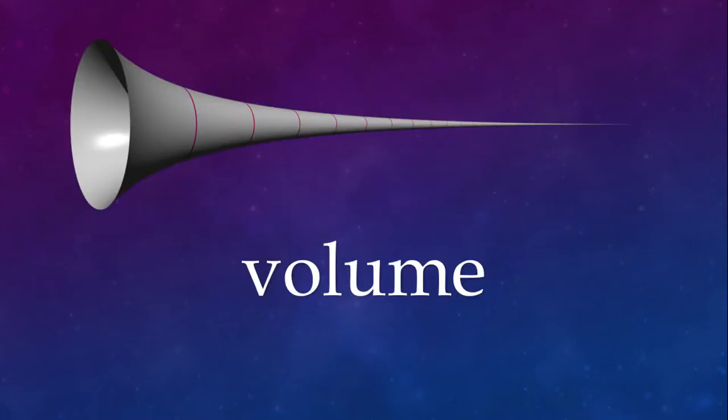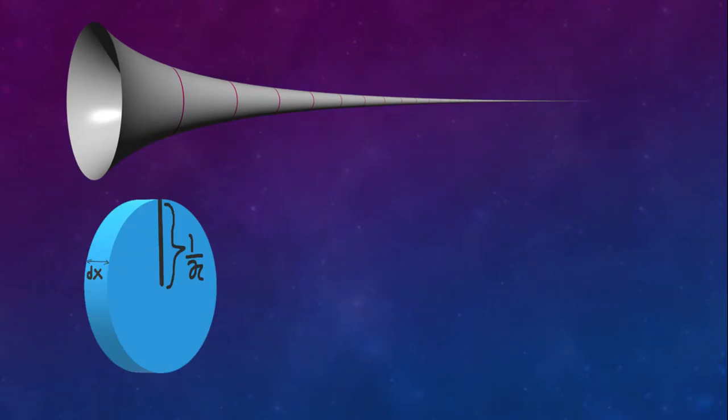So first up, let us figure out the volume of Gabriel's horn. The way we're gonna do it is by figuring out a function that gives you the volume of a very thin slice of our horn and then integrating over that function. And we're gonna assume that the thickness of that slice approaches zero.